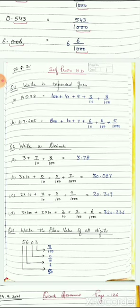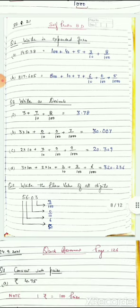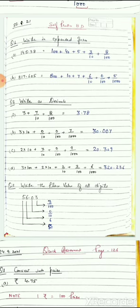Now the reverse — converting expanded form into decimal form. Suppose you have: 3 × 10 + 0 upon 10 + 0 upon 100 + 7 upon 1000. On the left side there is 30, then the decimal point. 0 upon 10 means 0, 0 upon 100 means another 0, and 7 upon 1000 means 0.007. So the answer is 30.007.